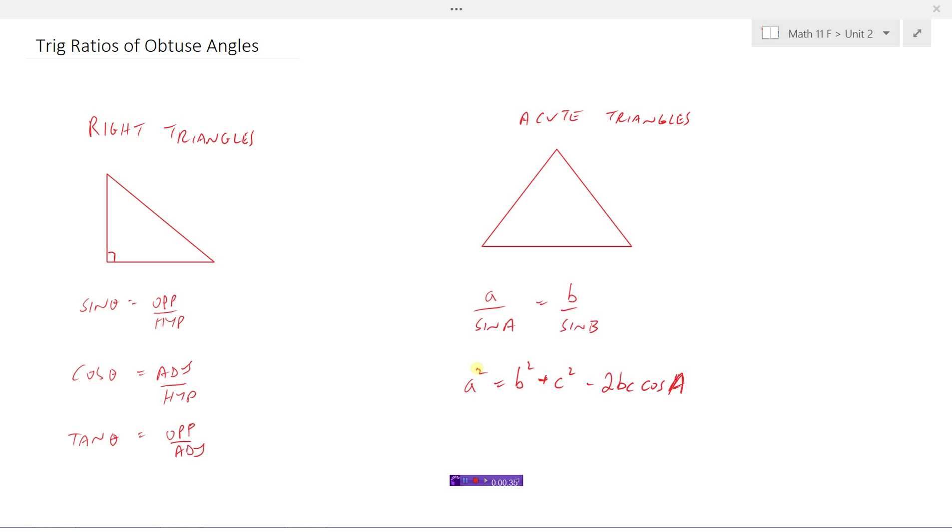More recently we've learned how to find angles and sides in triangles that do not have 90 degree angles in them. Specifically, you probably looked at acute triangles. Acute triangles are where the angles are less than 90 degrees. All of the angles in this triangle are less than 90 degrees.